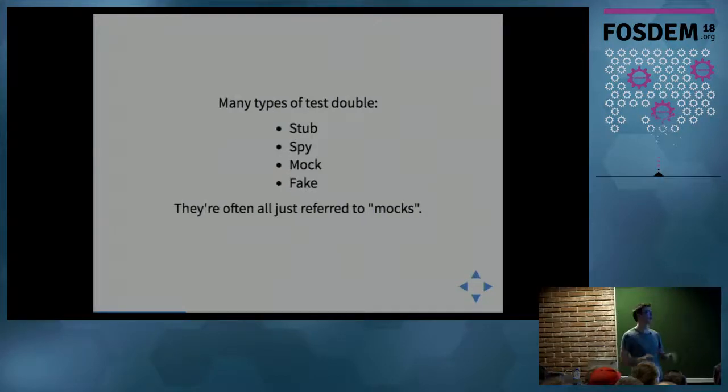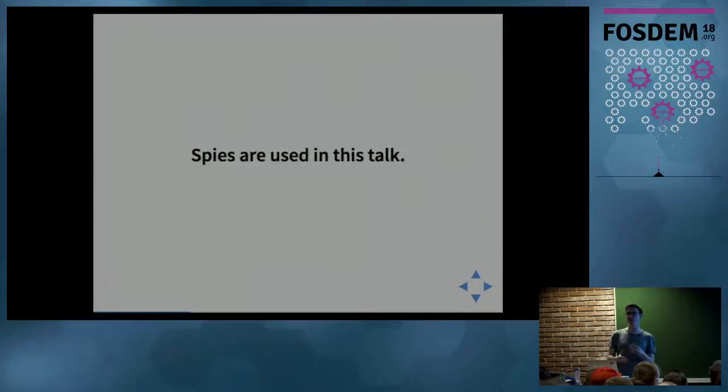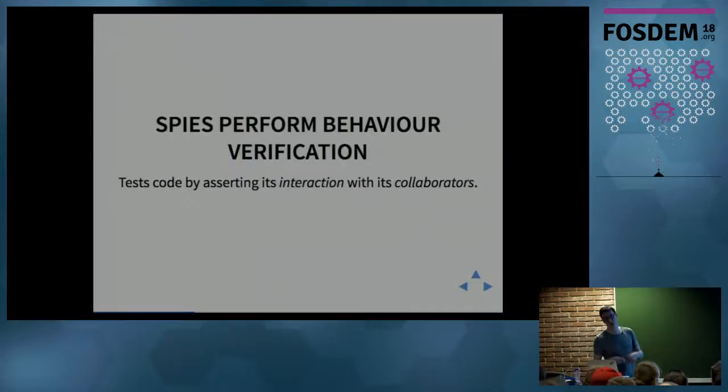There are many types, but most people just refer to all of these doubles as mocks. What we're actually covering is spies, which is a specific type that you can configure to behave in different ways, but it also records all the interaction that the code on test has with it - all the times it was called and what it was called with. This is called behavior verification, which is a style of unit testing by asserting on its interaction with its collaborators or dependencies.